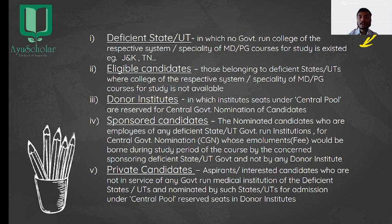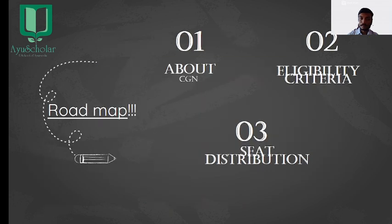Under sponsored candidates we have teachers, medical officers, research officers, and other government employees of that deficient state or union territory. Private candidates exclude those categories. Coming to donor institutes — these are the institutes in which seats under the central pool are reserved for Central Government Nomination. Our roadmap today: first we will look at CGN, then eligibility criteria, and finally seat distribution among donor institutes and which departments have particular reserved seats.